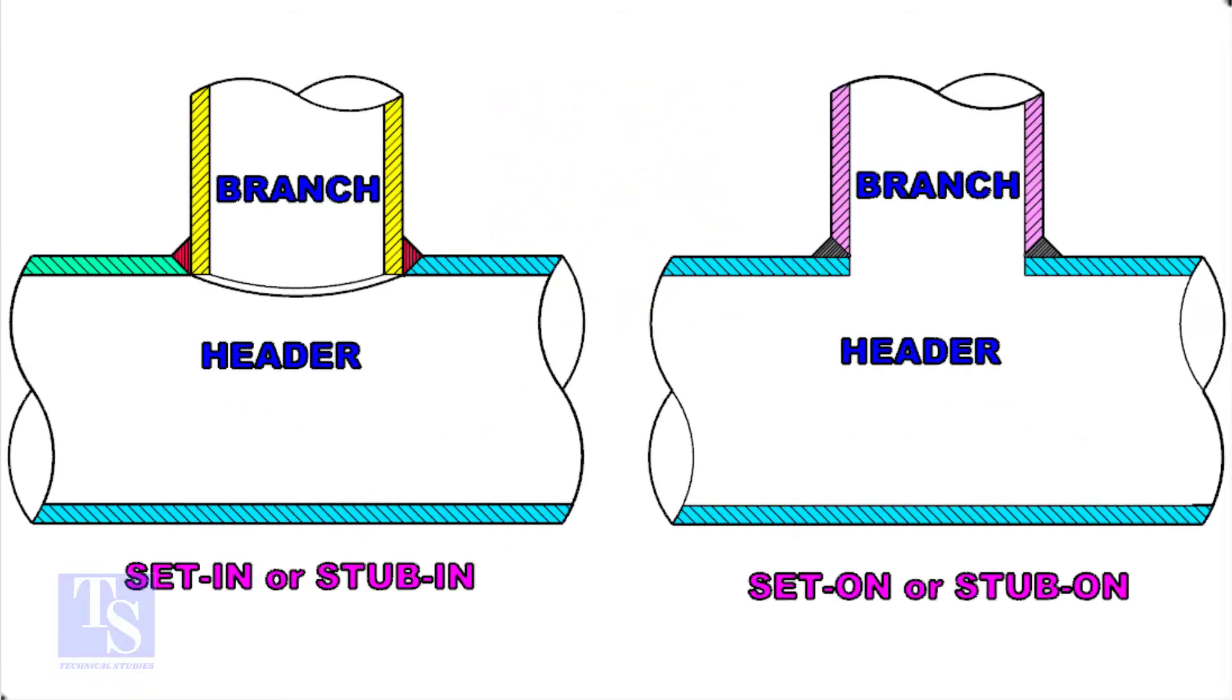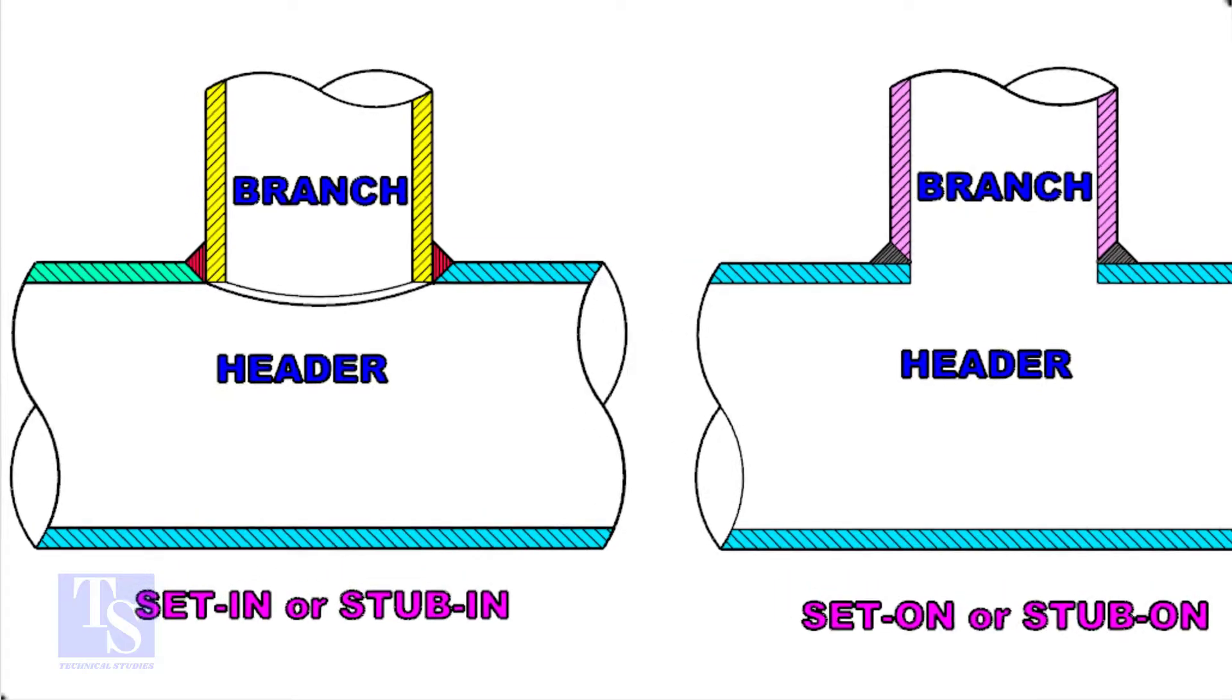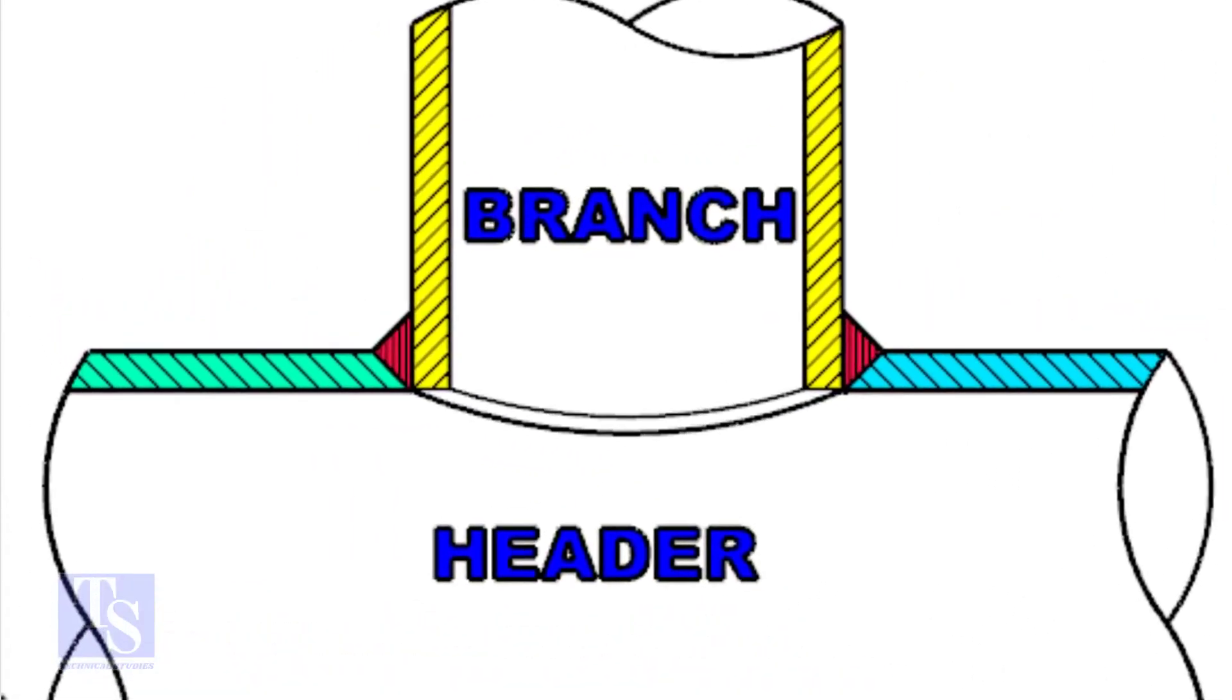Let us check the difference between a stub-in and stub-on connection. Look at the stub-in joint, the bevel is prepared on the header. And the branch pipe is in the header.